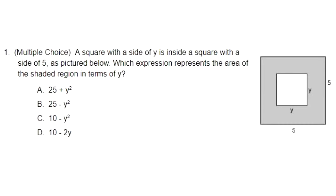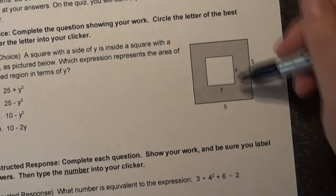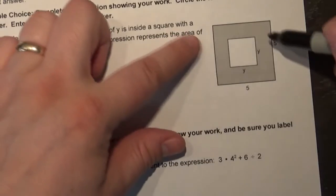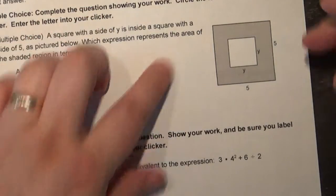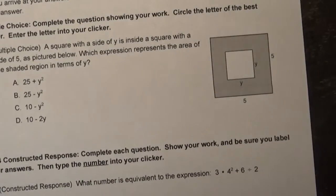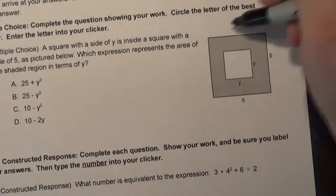Let's get right to it by looking at number one. Number one says a square with a side of y is inside a square with a side of five, as pictured below. Which expression represents the area of the shaded region in terms of y? Here's our diagram and this is going to be helpful for us. Obviously a square has sides of the same length, so five here, five there, five here, five there.